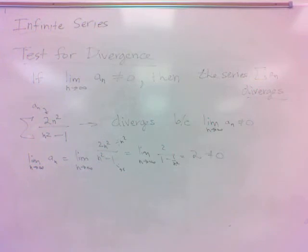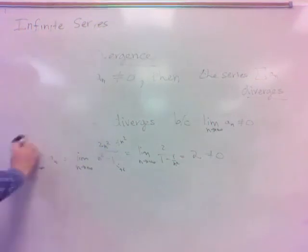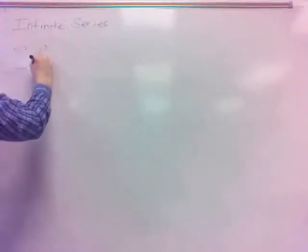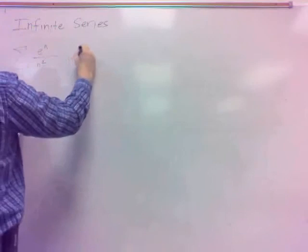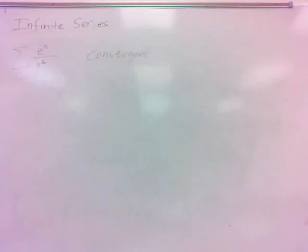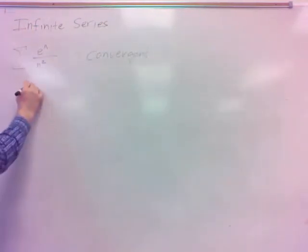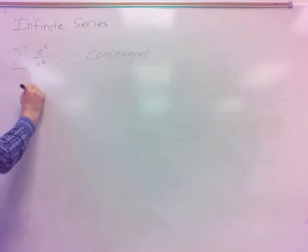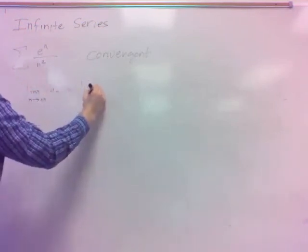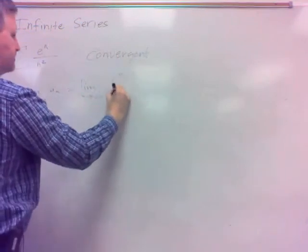Let's test for divergence. What about this one? The series is e to the n over n squared. Does that one converge? Again, since we're looking at our test for divergence, let's look at the limit of a sub n. That's the limit as n goes to infinity of e to the n over n squared.